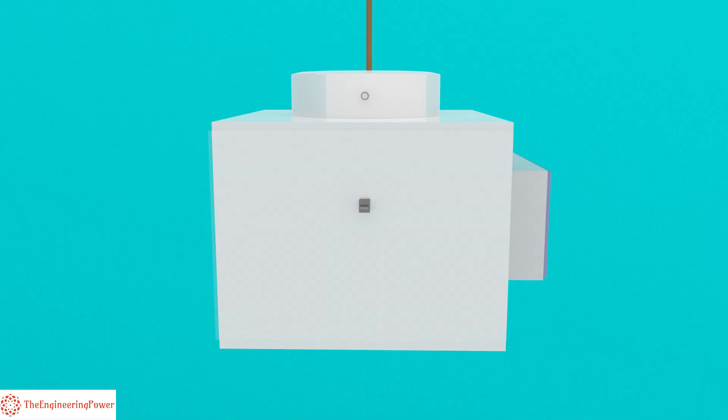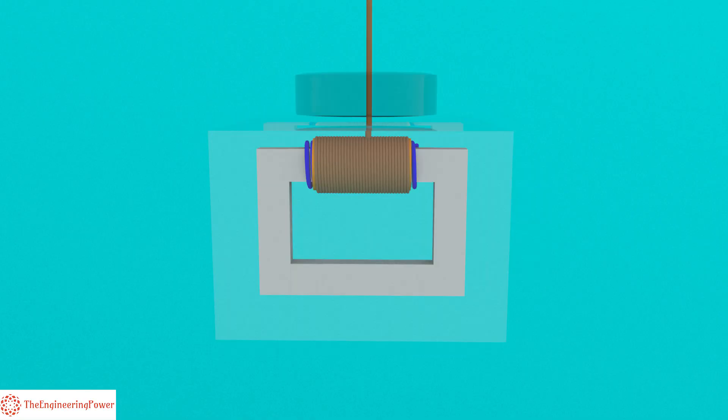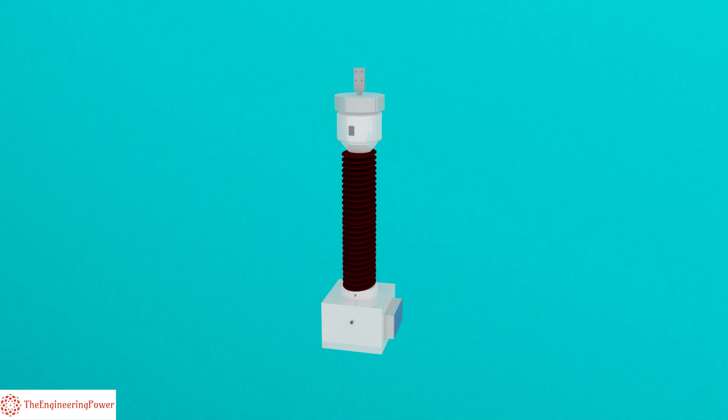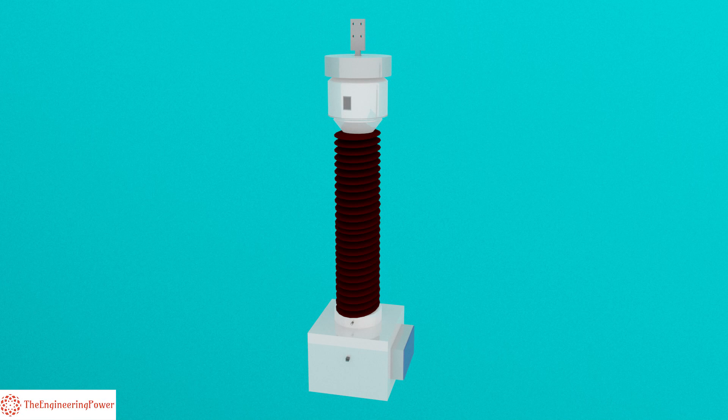We know that there are four major components of a potential transformer: core, primary winding, secondary winding, and insulation. As the primary voltage level of the system increases, we need a bigger size of potential transformer to step down the voltage effectively.